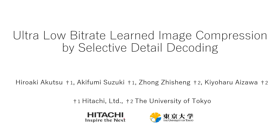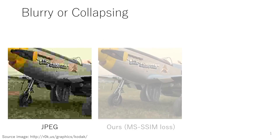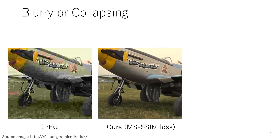In this work, we propose an ultra-low bitrate image compression algorithm that optimizes for perceptual quality. Traditional codecs like JPEG have a problem where image quality is quite low with artifacts in low bitrate conditions. Deep learning-based image compression can achieve higher quality by directly optimizing image quality metrics like MS-SSIM.